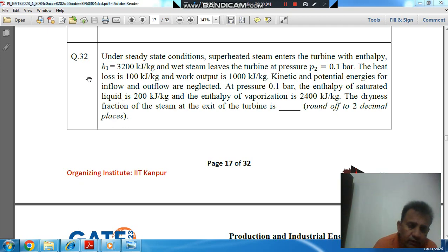Hello, welcome again. We are solving GATE 2023 Production Engineering paper, question number 32. Under steady state conditions, superheated steam enters the turbine with enthalpy h1 equal to 3200 kilojoules per kilogram and the steam leaves